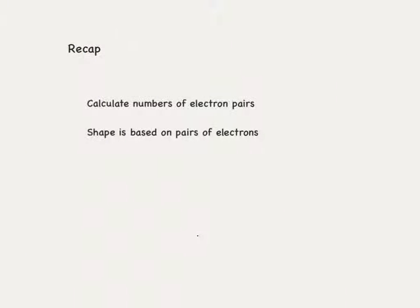Just quickly to recap, you work out the shape by first calculating the numbers of electron pairs around the central atom, and then the shape is based on the pairs of electrons, and importantly the bonding pairs of electrons. Next time we'll see how lone pairs and charges affect the shapes of these molecules. I'll see you next time. Bye for now.